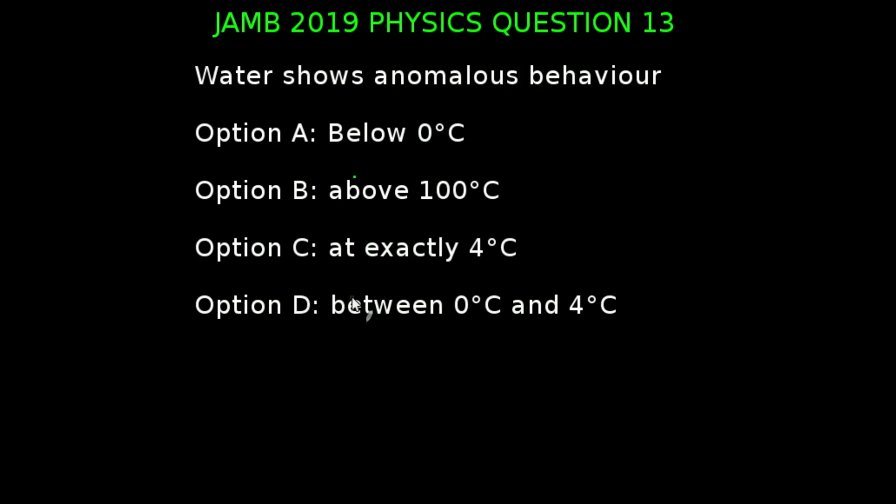let us quickly know by definition what anomalous behavior of water means. This is a phenomenon whereby water expands instead of contracting when the temperature goes from 4 degrees Celsius to 0 degrees Celsius.